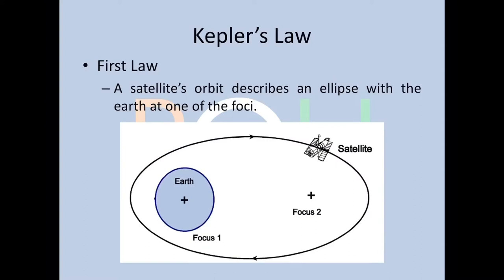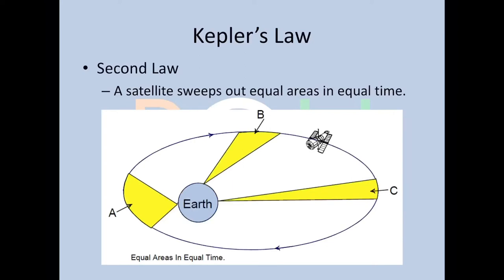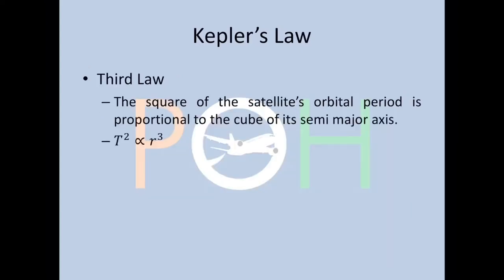Before we get into the discussion, let's talk about Kepler's laws. The first law states that a satellite's orbit describes an ellipse with the Earth at one of the foci. The second law states a satellite sweeps out equal areas in equal time — the yellow areas in the diagram are equal. The third law states the square of the satellite's orbital period is proportional to the cube of its semi-major axis: T² is proportional to R³.